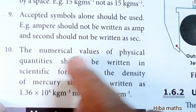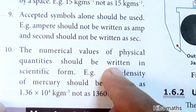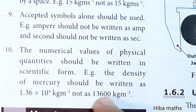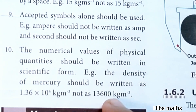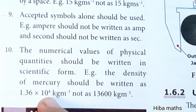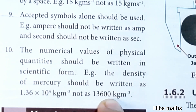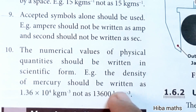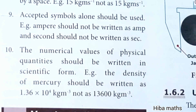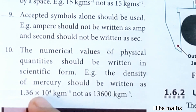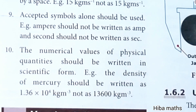The numerical values of physical quantities should be written in scientific form. For example, 13,600 is written as 1.36 × 10 to the power 4. We place the decimal point after the first digit and count how many times we jump - in this case 4 times - so it becomes 10 power 4.